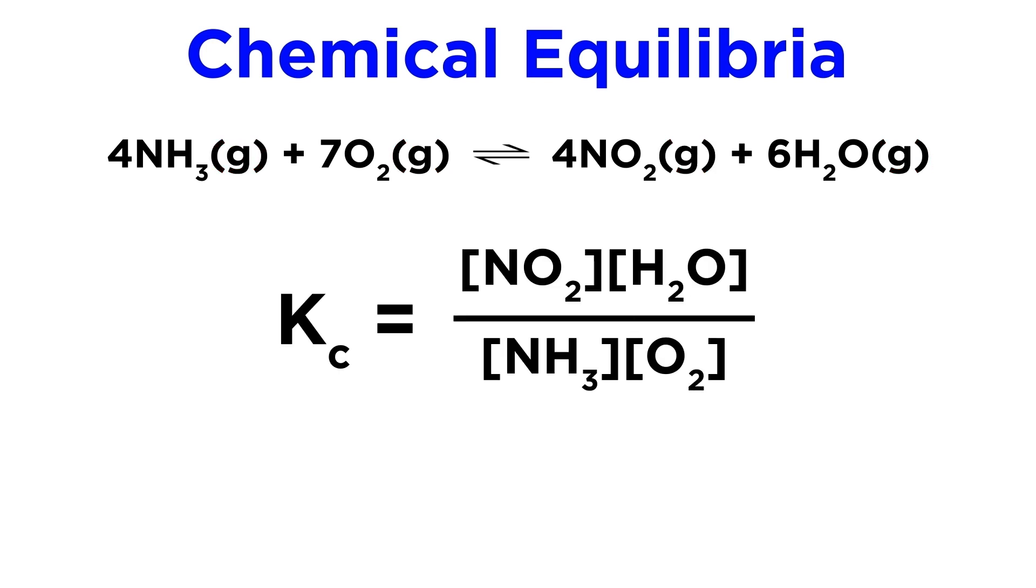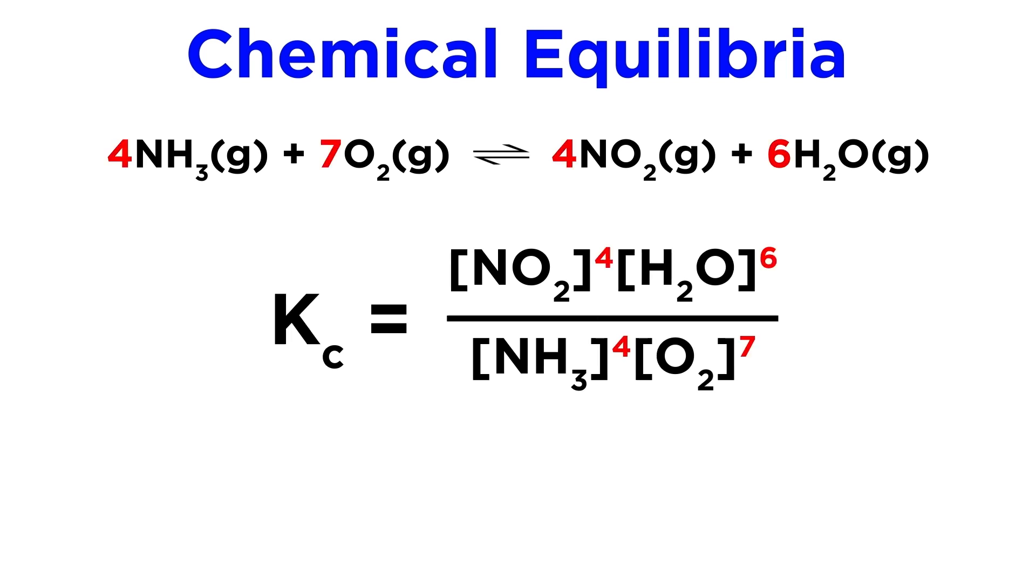Again, we know that K will be equal to the concentrations of the products over the concentrations of the reactants. Then we know that each of these concentrations must be raised to the power of their stoichiometric coefficients. So up top that means a 4 and a 6, and on the bottom there will be a 4 and a 7. This will be the expression for K.